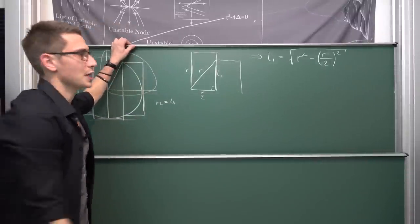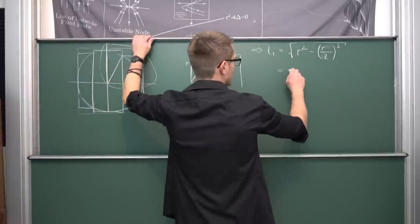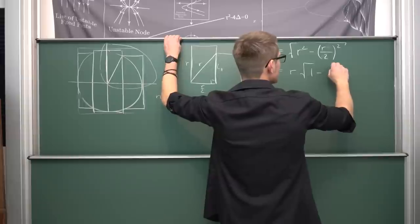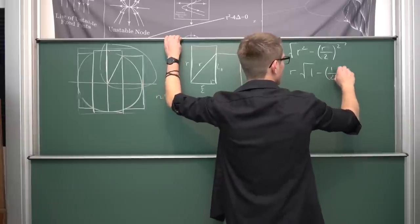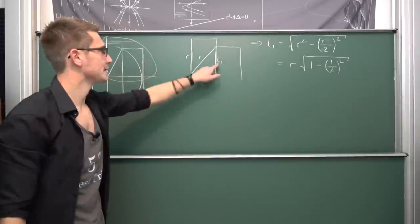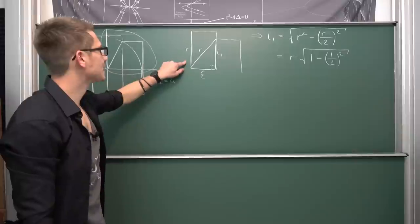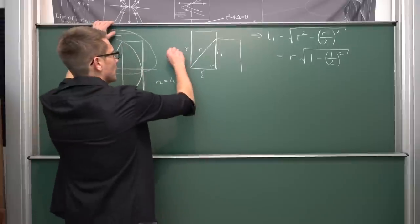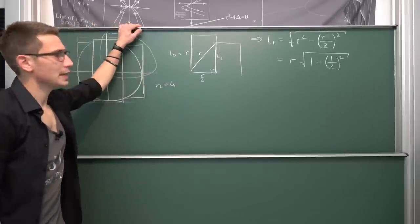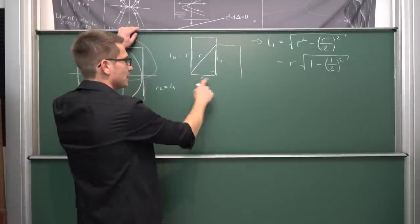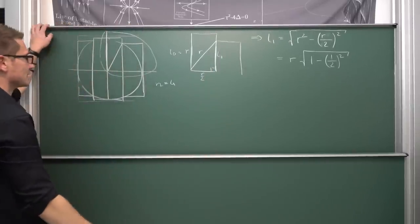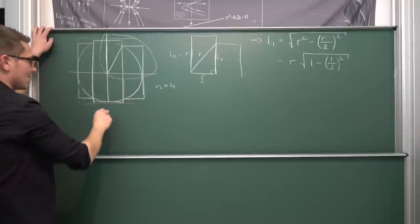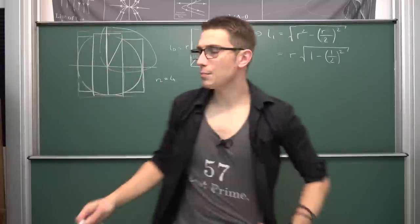So our length l1 is r times the square root of 1 minus (1/2) squared, and the length of the middlemost board is l0 equals r. We've now figured out the case for n equals 4. Since everything is symmetric, l1 is the same on all corresponding sides. What about n equals 6? Let us proceed.